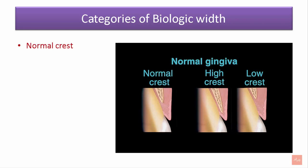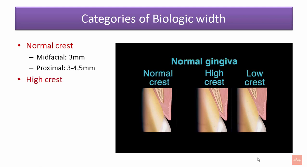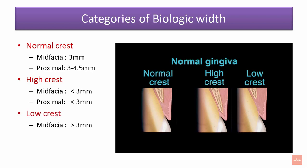A normal crest has a mid-facial distance from the crest of the gingiva to the alveolar crest of about 3 mm, and proximally 3–4.5 mm. A high crest has mid-facial dimensions less than 3 mm and proximal dimensions also less than 3 mm. A low crest has mid-facial dimensions more than 3 mm and proximal dimensions more than 4.5 mm. For a normal crest, gingival margins should be placed 0.5 mm into the gingival sulcus. For a high crest, flap reflection and osseous recontouring is suggested. For a low crest, gingivectomy is advised to re-establish biological width.